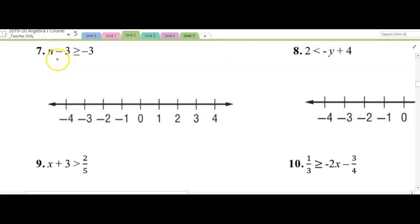Number 7, we're going to add 3 to both sides. n is greater than or equal to 0. Closed dot on 0, shaded to the right.